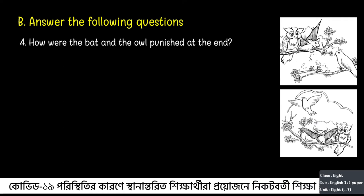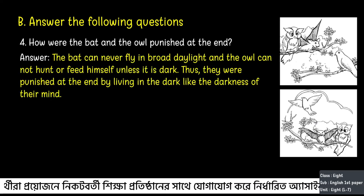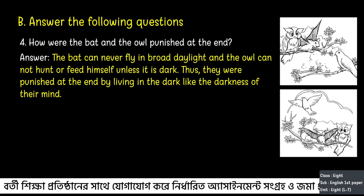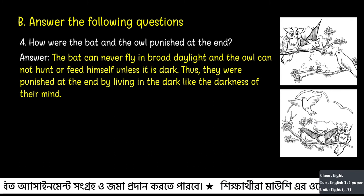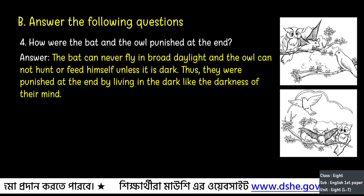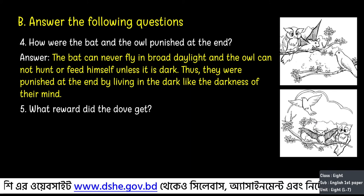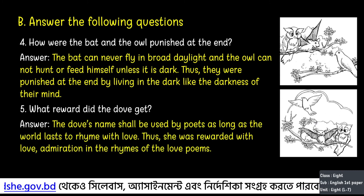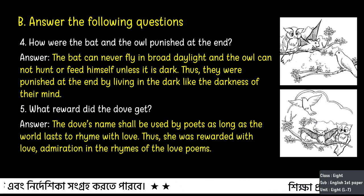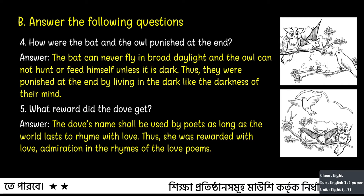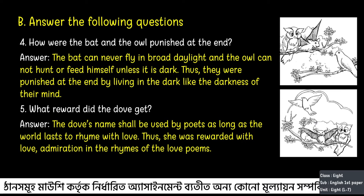Question 4: How were the bat and the owl punished at the end? The bat can never fly in broad daylight and the owl cannot hunt or feed himself unless it is dark. Thus, they were punished at the end by living in the dark, like the darkness of their minds. Question 5: What reward did the dove get? The answer will be: the dove's name shall be used by poets as long as the world lusts to rhyme with love. Thus, she was rewarded with love and admiration in the rhymes of love poems.